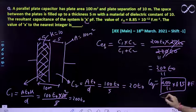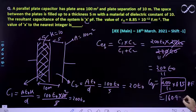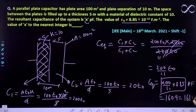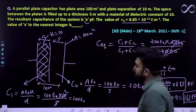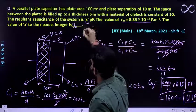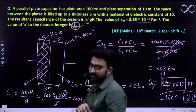So isko solve karne pe aayega aapka close to 160.9 which is nothing but 161 picofarad. This would be our correct expression. So the answer would be 161 which is the value of x.